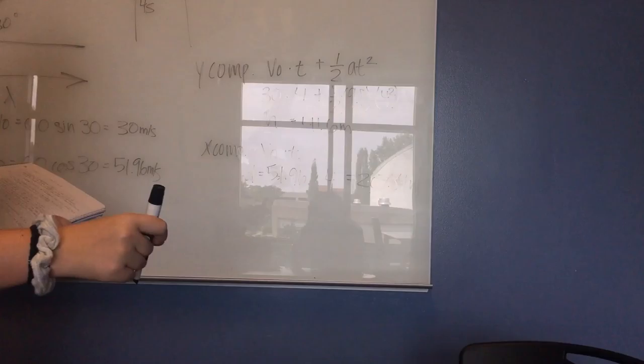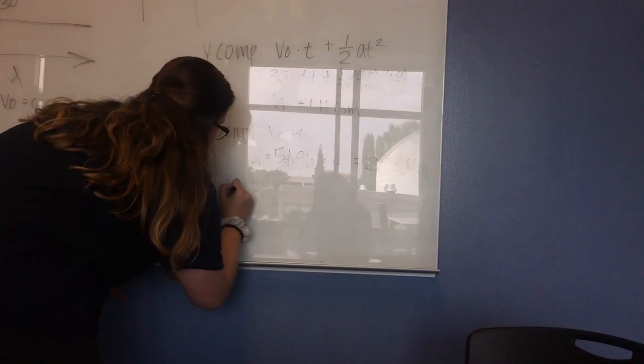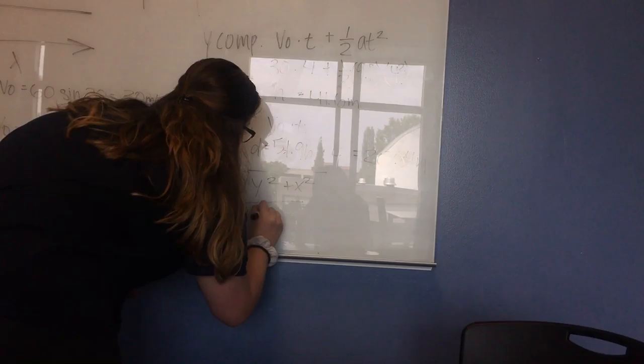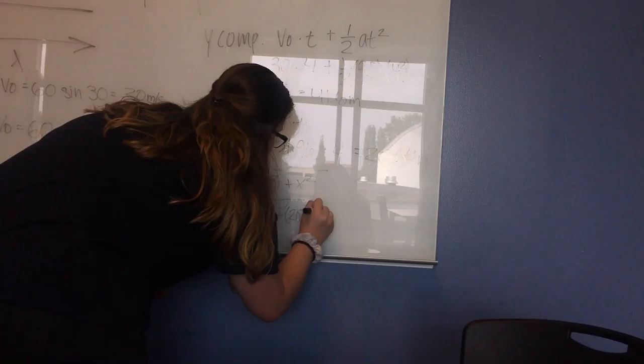Then we have to combine those to get the total distance. So d equals the square root of y squared plus x squared, which is the square root of 41.6 squared plus 207.84 squared, which is going to equal 211.96 meters. And that's the answer to part B for the straight line distance between when it was launched and when it landed on the hillside four seconds later.